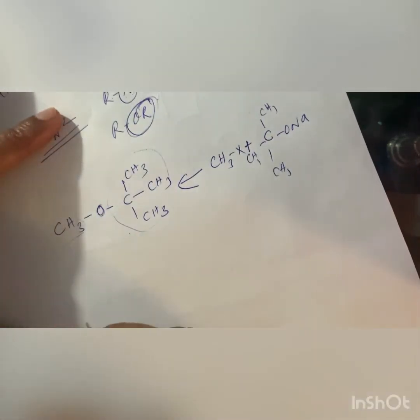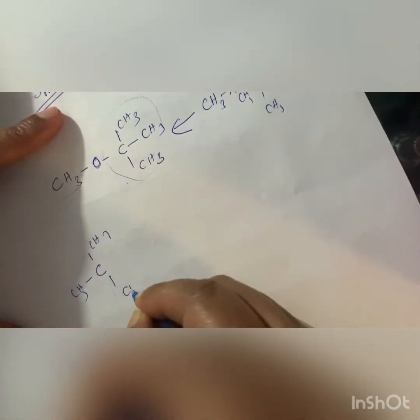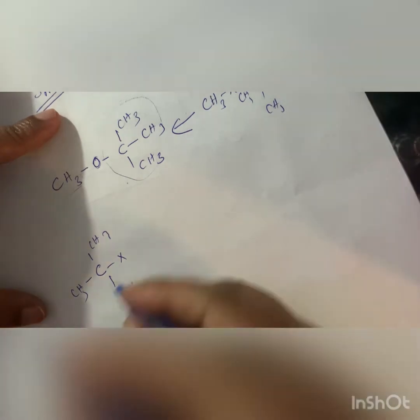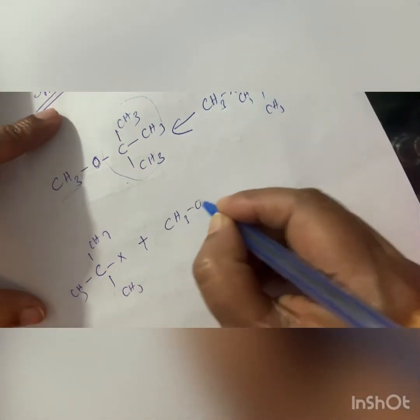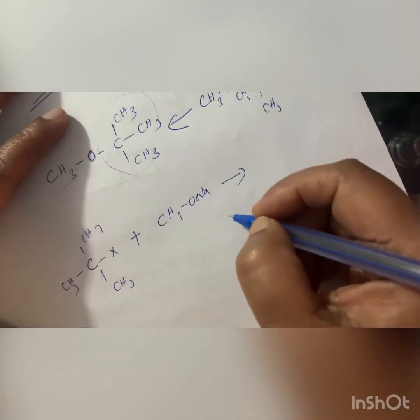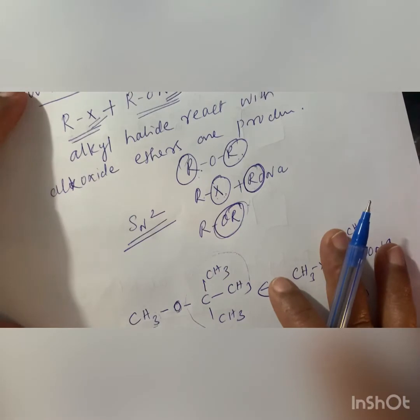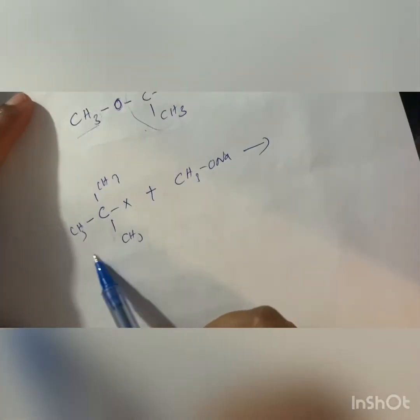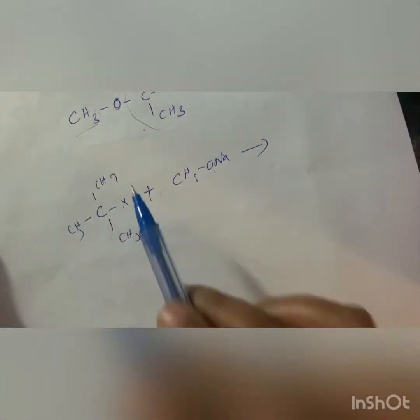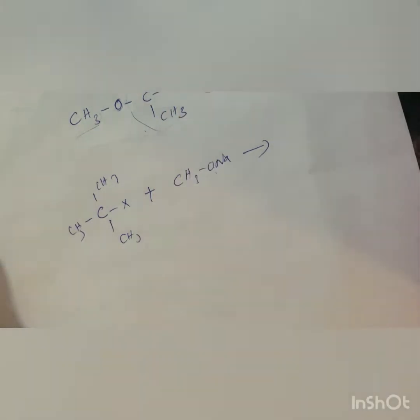If instead you take the tertiary group as RX — for example, (CH₃)₃C–X — and CH₃ONa as the alkoxide, what happens? Instead of substitution, elimination reaction will occur. The Williamson's synthesis mechanism is SN2 (substitution), but with a tertiary RX, SN2 is not possible.